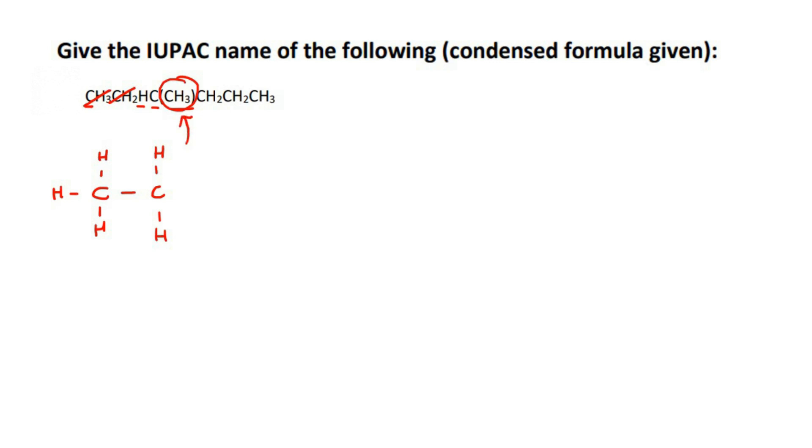It cannot be part of the main chain because how would you fit a CH3 here? You see it's impossible, that's only a CH2. We cannot put another H over there because then these parts wouldn't be able to fit in. So it cannot be a CH3 in the main chain. That means it's a branch.